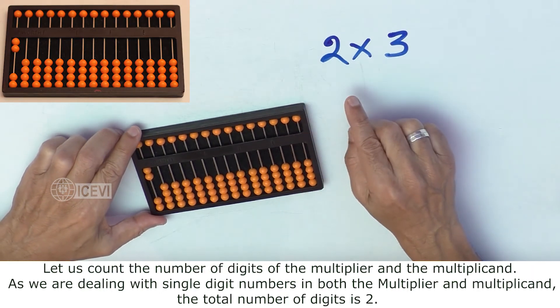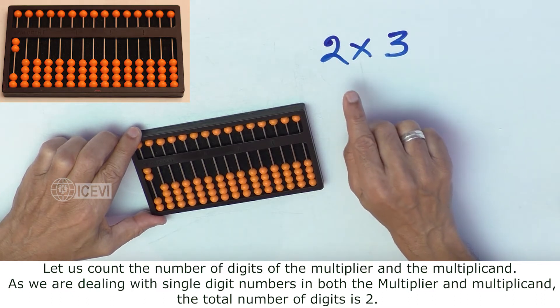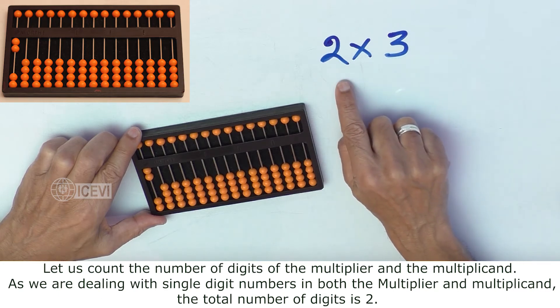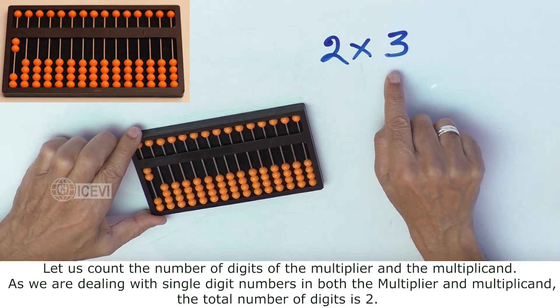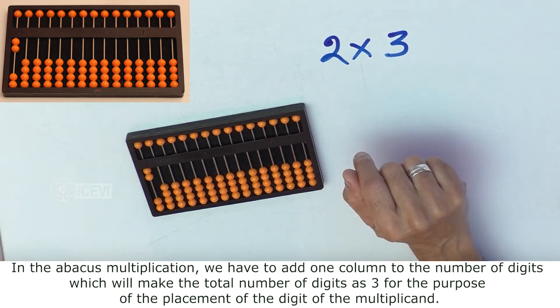Let us count the number of digits of the multiplier and the multiplicand. As we are dealing with single-digit numbers in both the multiplier and multiplicand, the total number of digits is 2.